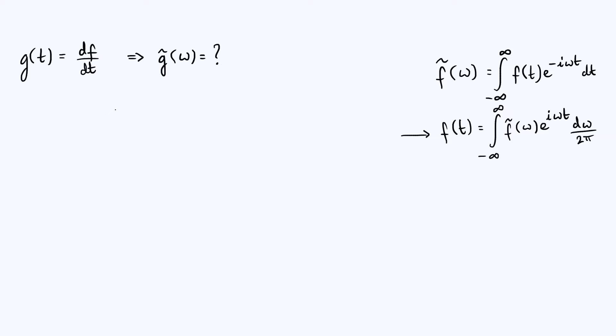Now the easiest way to do this is to say that g of t is just d by dt of f, but then we can express f using the inverse Fourier transform. So f is the integral from minus infinity to infinity of f tilde of omega e to the i omega t d omega over 2 pi.